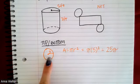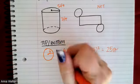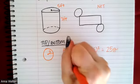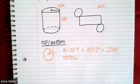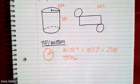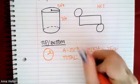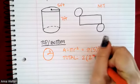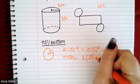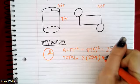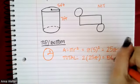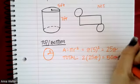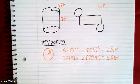That's just the area of one circle. But since the top and bottom are the same size, the total area of both circles is two times 25 pi. Two times 25 is 50, so the total area of both circles is 50 pi.